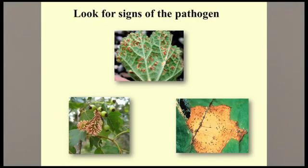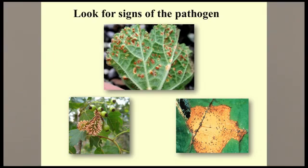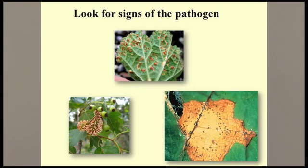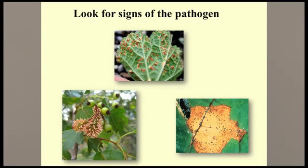The next step in diagnosis is to look for signs. Signs are part of the actual pathogen itself. Most of the signs we can see with the naked eye or a magnifying lens are fungal. The upper photo shows rust pustules on the underside of a hollyhock leaf infected with hollyhock rust — we would see yellow leaf spots on the upper surface as the symptoms. The photo in the lower right shows small black fruiting bodies in a black rot leaf spot on a grape leaf. The photo in the lower left shows the fruit of a hawthorn infected with quince rust — the orange structures are part of the rust fungus.